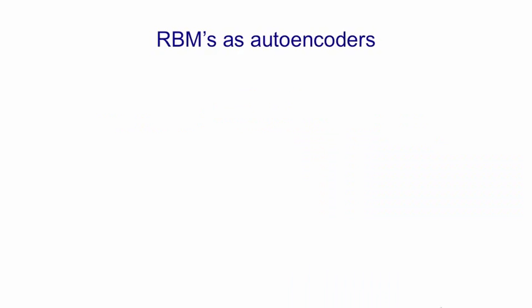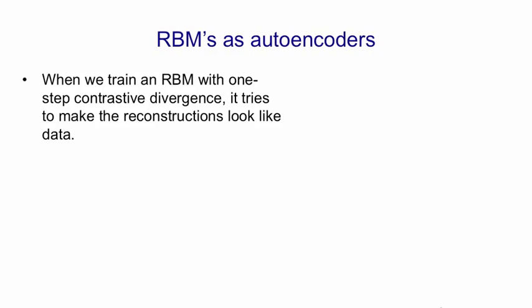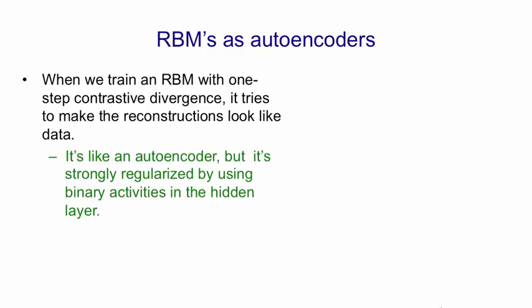We've seen some of the neat things that can be done with the codes produced by deep autoencoders. I now want to consider shallow autoencoders that just have one hidden layer. Restricted Boltzmann machines can be viewed as shallow autoencoders, particularly if they're trained with contrastive divergence, because they're trying to make the reconstructions look like the data. When viewed as an autoencoder, a restricted Boltzmann machine has very strong regularisation, because the hidden units are only allowed to have binary activities, and this restricts their capacity a lot.